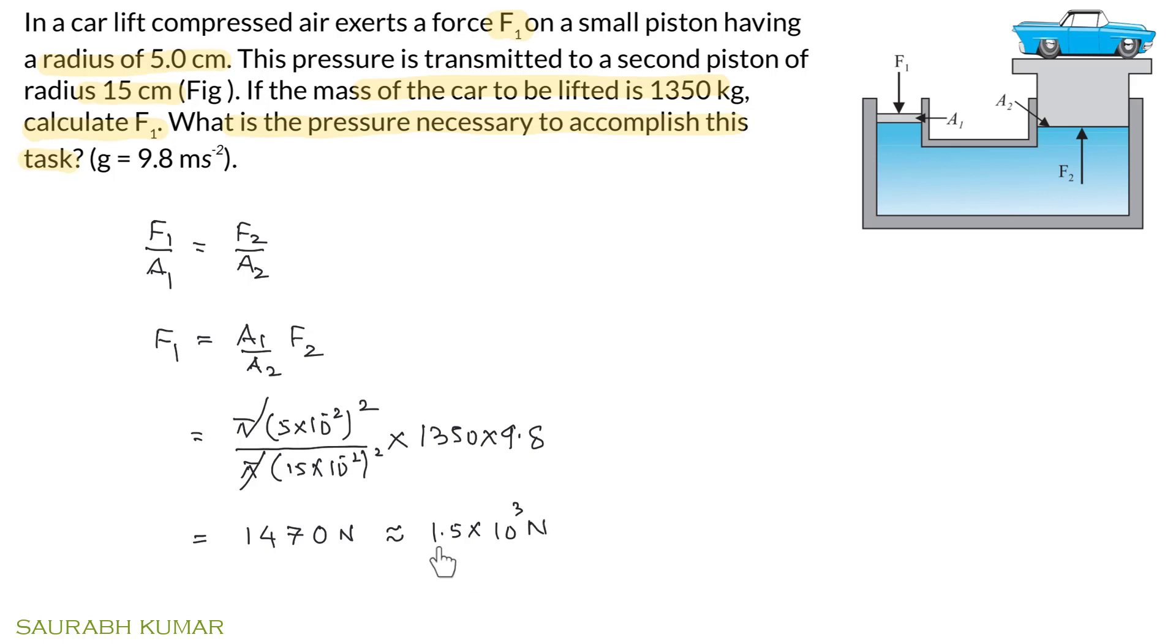Now for the associated pressure: F1/A1 equals 1.5 times 10³ divided by A1, which is π times (5 times 10⁻²)². Simplify this to get 1.9 times 10⁵ Pascals, so approximately 2 atmospheres.